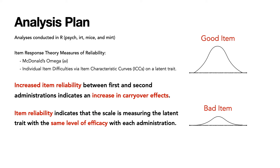We also looked at individual item difficulties with item characteristic curves. Item characteristic curves tell you what a good or bad item is. A good item gives you a lot of information under the curve, as seen in this graphic, while a bad item is flatter, close to a zero slope — it's not really telling you much about the item or question.